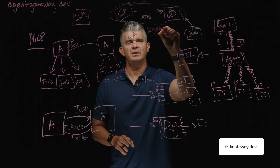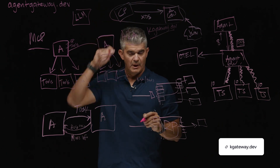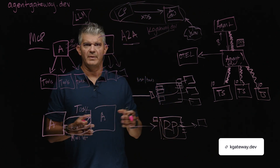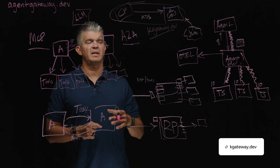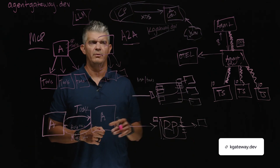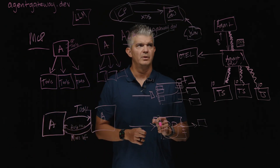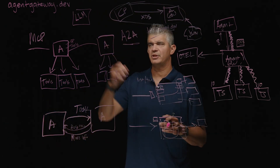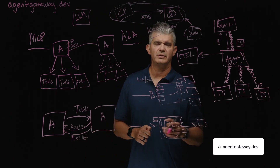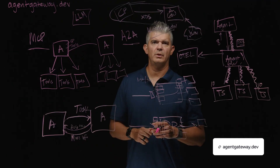These components together — the control plane and the data plane — come together in a project called K gateway. K gateway.dev started off as a traditional API gateway with a data plane built on Envoy, but can now support the Agent Gateway data plane for agentic communication and those types of workloads. If you're interested in learning more, go check out agentgateway.dev. Also check out some of the previous videos we've done on K agent, and otherwise check out solo.io.